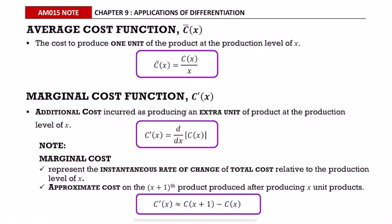Marginal cost function is denoted as c prime of x. It is the additional cost incurred when producing an extra unit of product at the production level of x. Marginal cost function equals the differentiation of the cost function. Marginal cost represents the instantaneous rate of change of total cost relative to the production level of x.